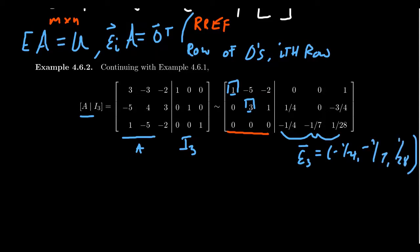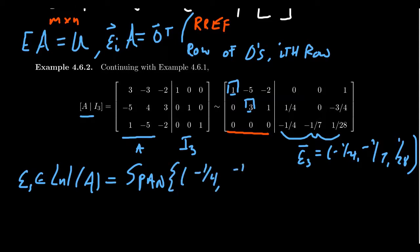So this right here gives you, epsilon_3 is inside the left null space of A. And in fact, the span of this single vector, negative one-fourth, negative one-seventh, and one-twenty-eighth, this vector by itself spans the entire left null space, so this single vector forms a basis for it.